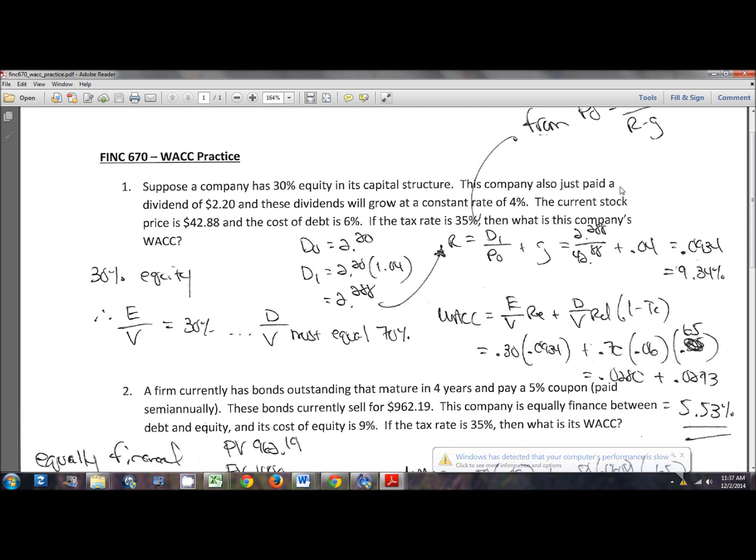Next, the company just paid a dividend of $2.20 and these dividends will grow at a constant rate of 4%. The current stock price is $42.88 and the cost of debt is 6%. Tax rate is 35%. What is the WACC?